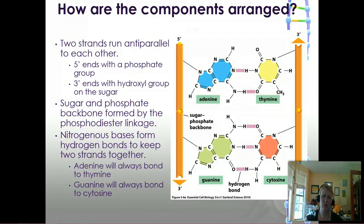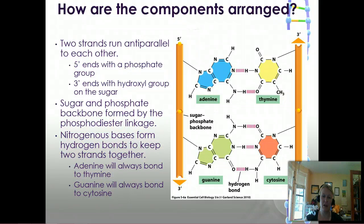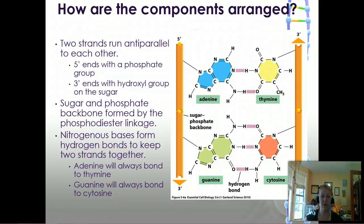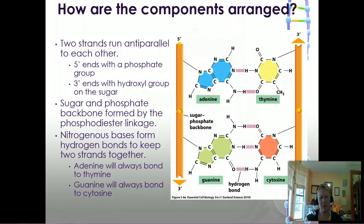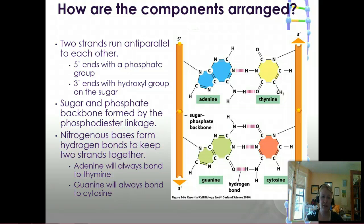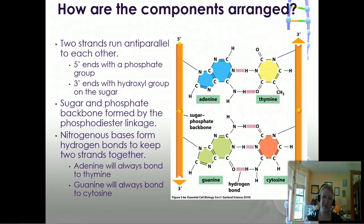The three prime end is where the hydroxyl group is exposed at the very end — that's the notch. The five prime end is where the phosphate group is sticking out. In between the backbone are the pyrimidine-purine pairings, which bind through hydrogen bonding. Adenine will always bind with thymine, and guanine will always bind with cytosine, because it's thermodynamically favorable — so it's not forced into something else.